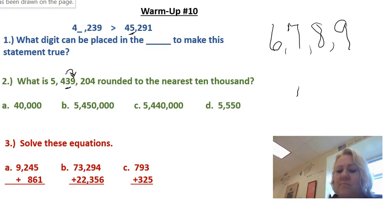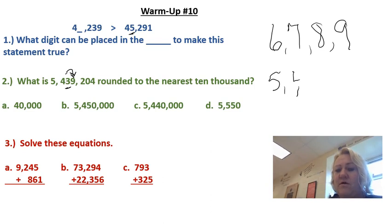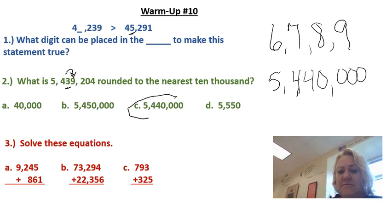When we round, we look at the number prior to the number we're looking at. That would be the number nine. That nine tells us five and above, give it a shove. So our new answer would be 5,440,000. And then don't forget the three zeros. That would be my answer. So the answer would be C.